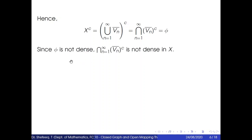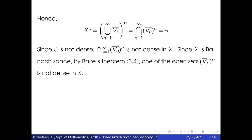Since ∅ is not dense, the intersection from n=1 to infinity of V̄n complements is not dense in X. Now since X is a Banach space, by Baire's theorem 3.4, one of the open sets V̄n complements is not dense in X.